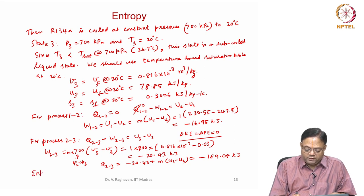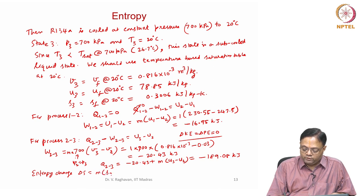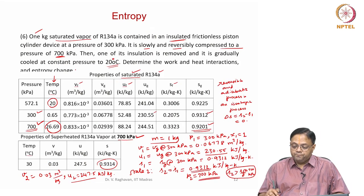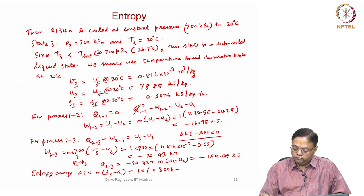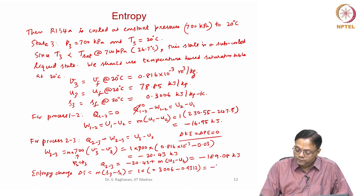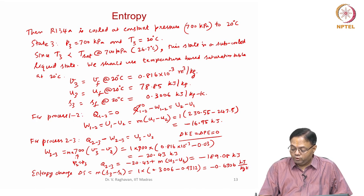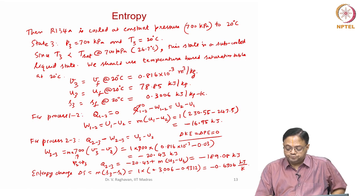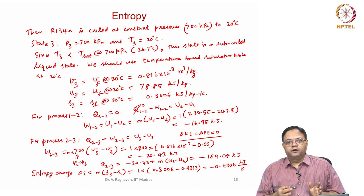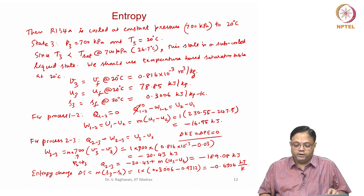For entropy change over the total process from state 1 to state 3: delta S equals M×(S3 minus S1) equals 1×(0.3006 minus 0.9312) equals minus 0.6306 kJ/K. The first process is isentropic and the second is a cooling process, so entropy decreases overall — which makes sense because heat is rejected from the system.